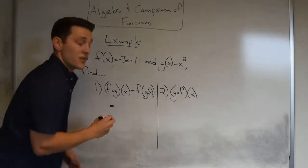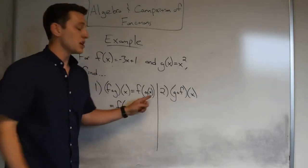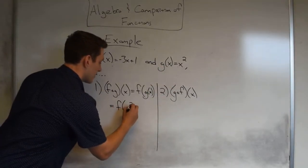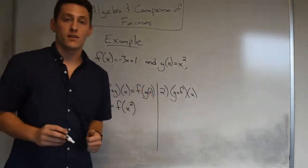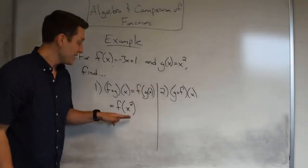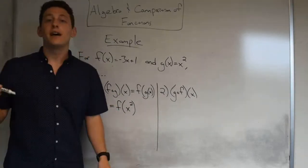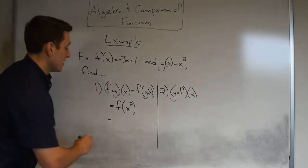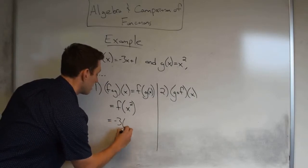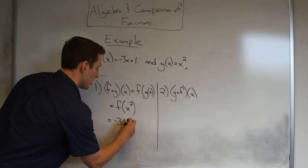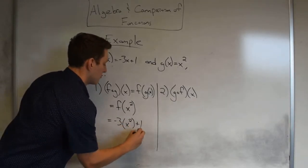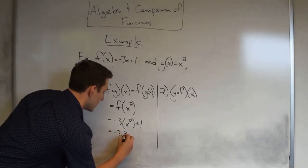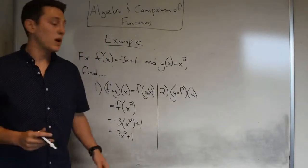First, substitute g(x) = x squared, so we're computing f(x²). Anywhere we see an x in f(x), we now input x squared. So f(x²) = −3(x²) + 1, which simplifies to −3x² + 1.